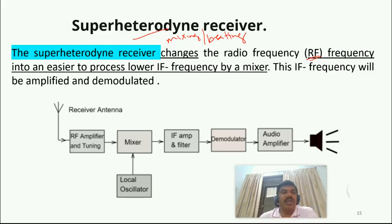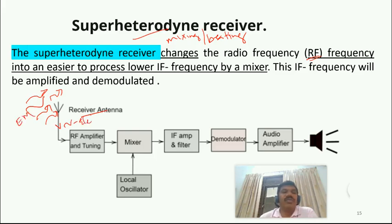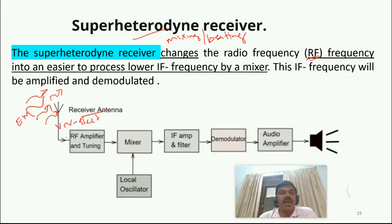Here, since it is a receiver, we are using a receiver antenna. The antenna captures varying electromagnetic waves and converts them into a varying electrical signal. So the EM wave is captured by the antenna and converted into an electrical signal.